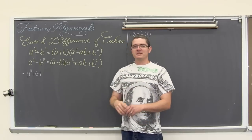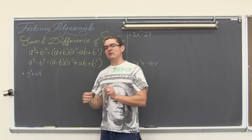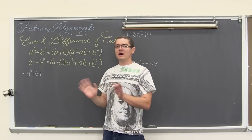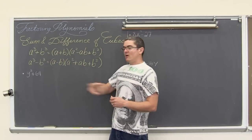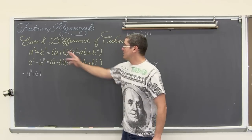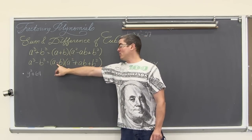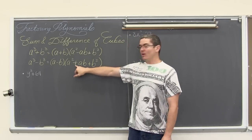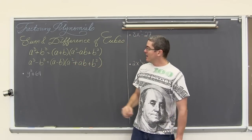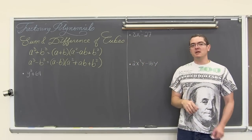Otherwise you need some synthetic division and craziness to try to get that third degree down to a second degree and find a perfect factor of that. So we just want to follow these patterns. For a cubed minus b cubed, it is the same pattern except the plus becomes a minus in the binomial, and the middle term of the remaining trinomial has a plus instead of minus: a minus b times a squared plus ab plus b squared.